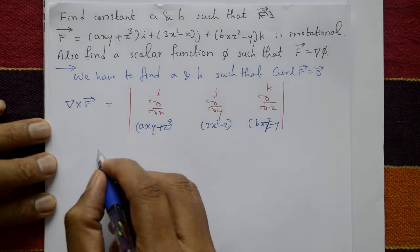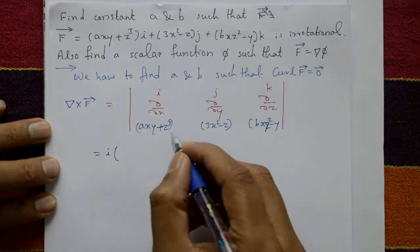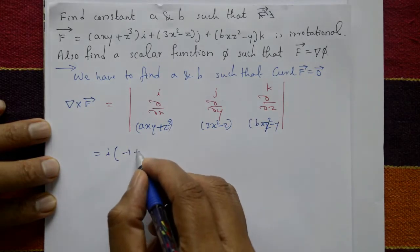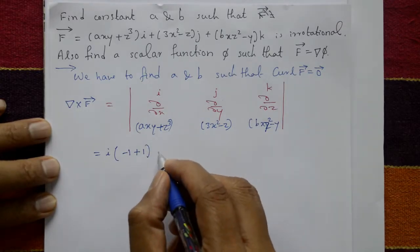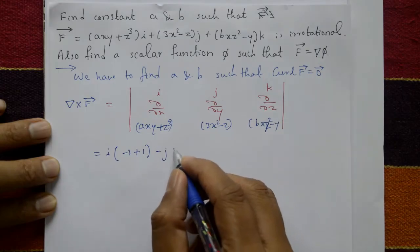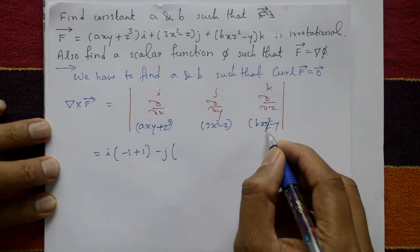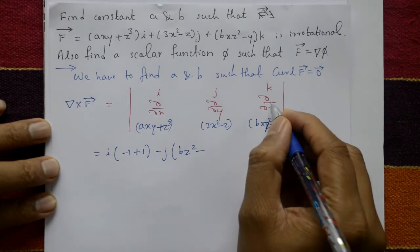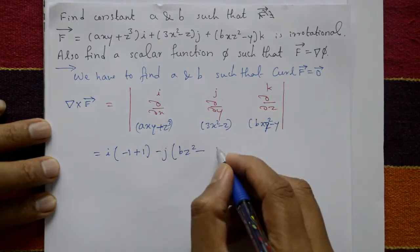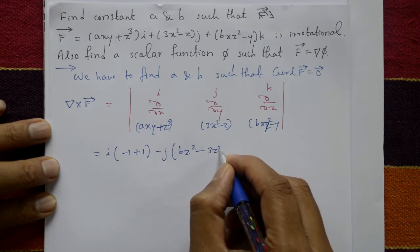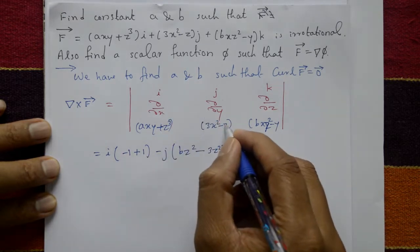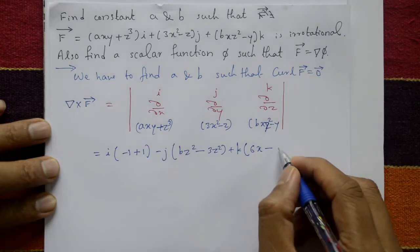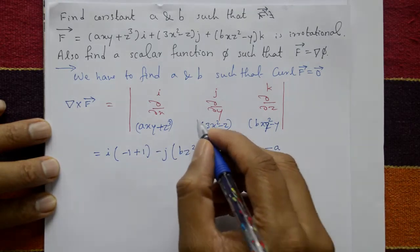Expanding this determinant: the i component involves differentiating with respect to y giving -1, and with respect to z giving -1, so plus one. The j component uses the minus sign pattern. Differentiating with respect to x gives bz², and differentiating with respect to z gives 3z². The k component: differentiating with respect to x gives 6x, and differentiating with respect to y gives ax.